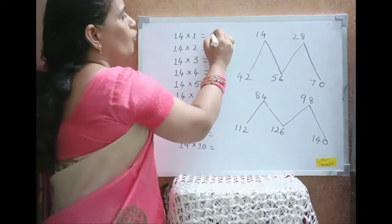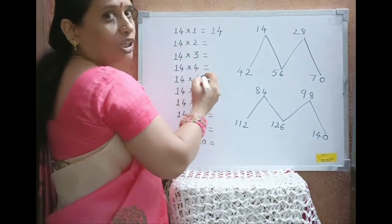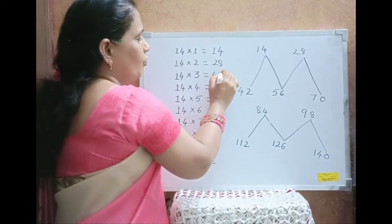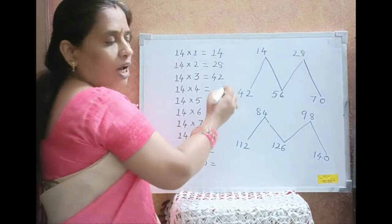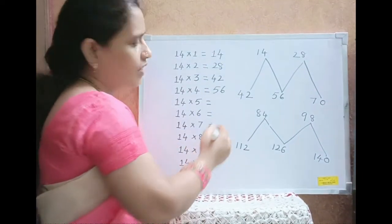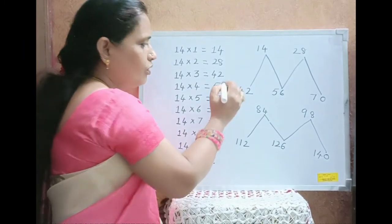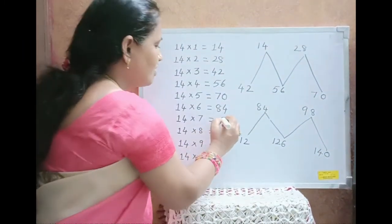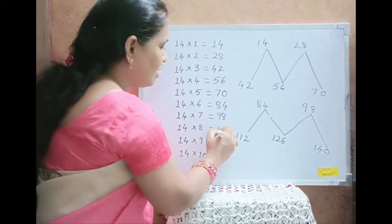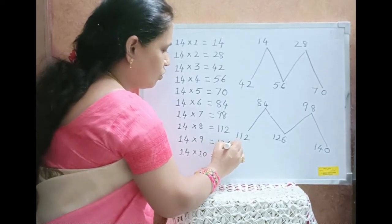14 times 1 is 14, 14 times 2 is 28, 14 times 3 is 42, 14 times 4 is 56, 14 times 5 is 70, 14 times 6 is 84, 14 times 7 is 98, 14 times 8 is 112, 14 times 9 is 126.